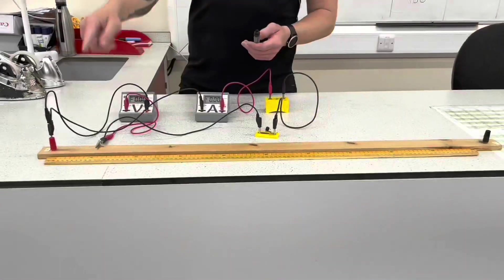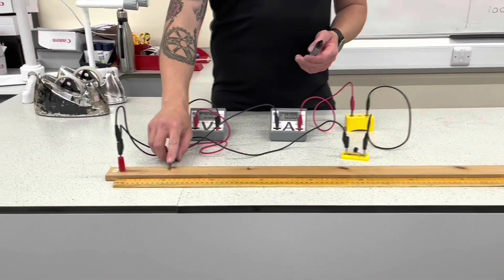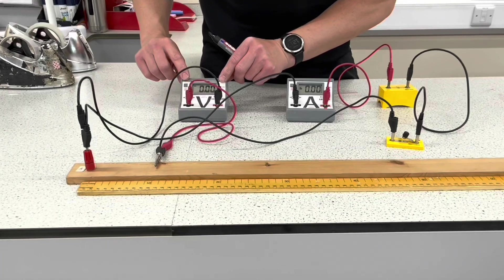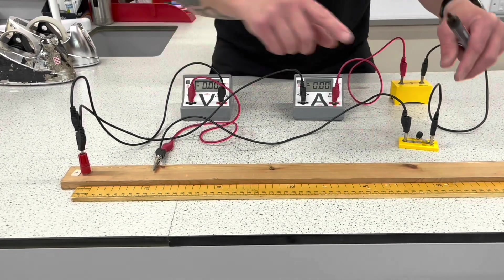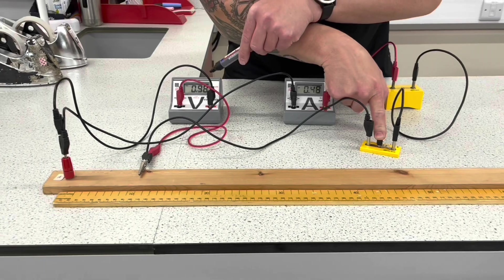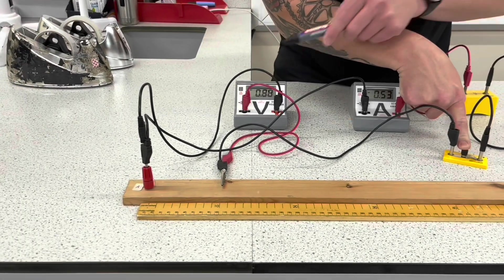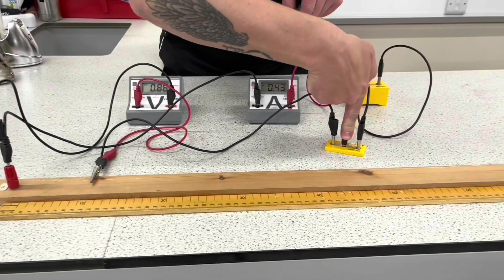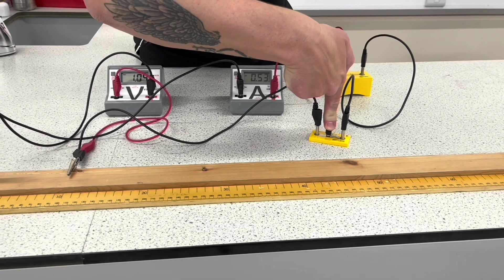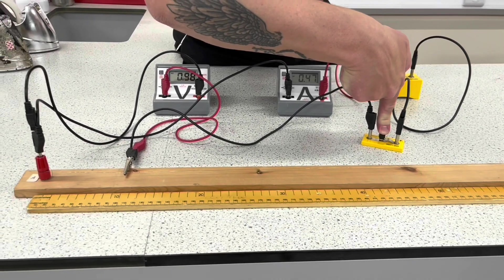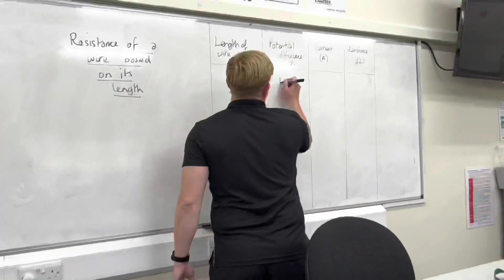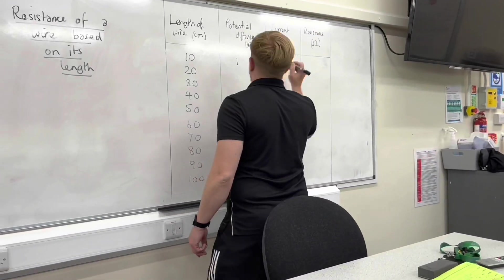We're going to start at 10 centimeters here. We're going to take our reading by pressing the switch. The voltage reads 1 and the current reads 0.4.